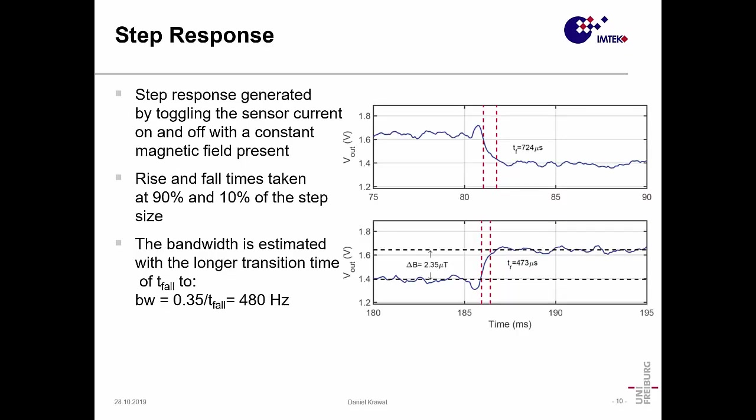Now to the step response measurement to detect the bandwidth. The step response was generated by toggling the sensor current on and off with a constant magnetic field present. This is due to the fact that it's much easier to achieve this in a measurement setup than to have a fast, precise, changing magnetic field and a constant current amplitude. The rise and fall times were taken at 90 and 10 percent of the step size.